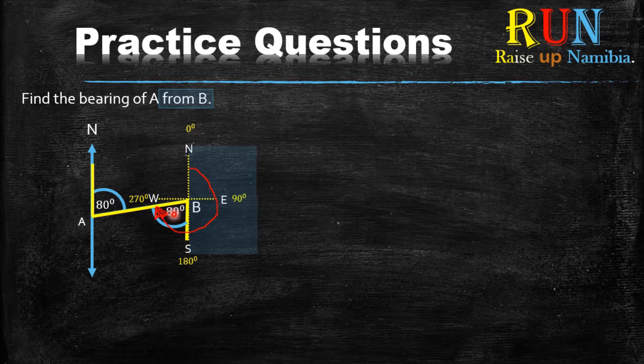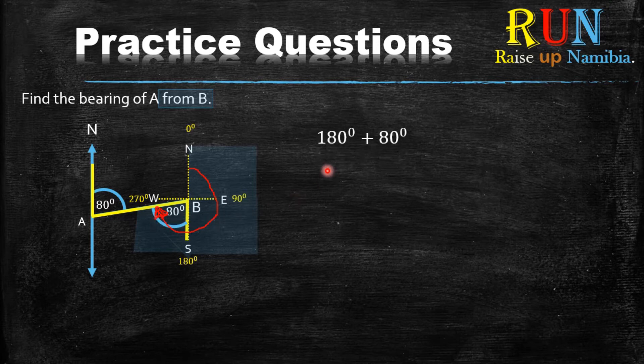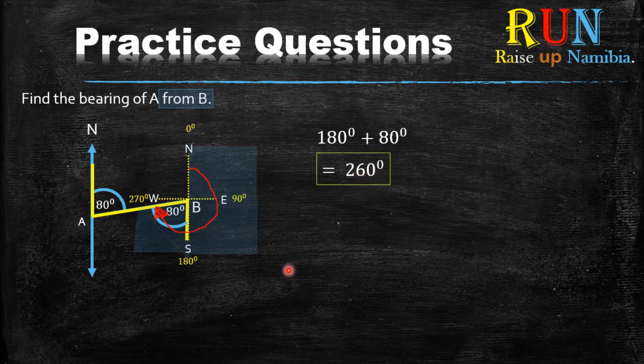Now if you know that this is 80 degrees, and from 0 until here is 180, what you can do is take the 180 plus the 80 degrees. So what do you get? 180 degrees plus 80 will give you 260 degrees, which is your final answer.